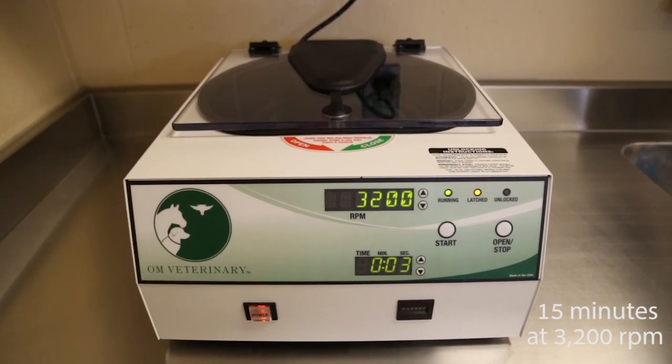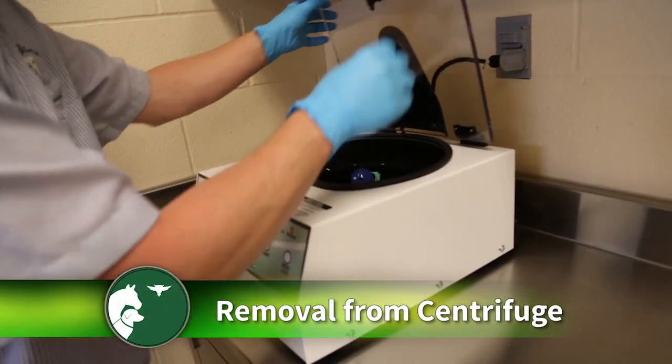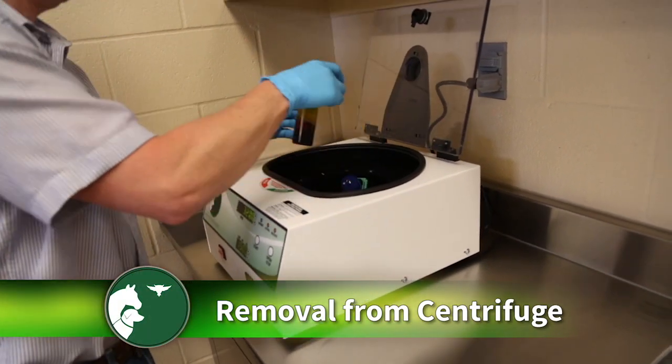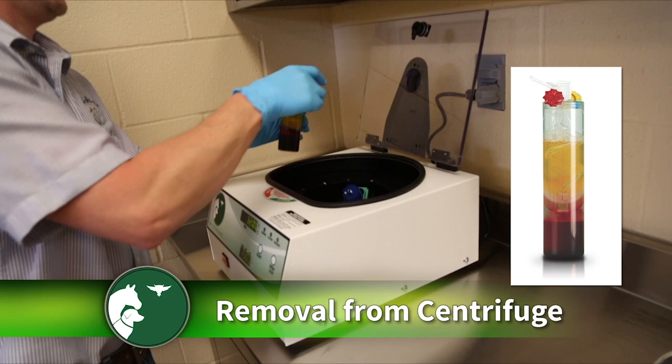At completion of the 15 minute spin, press the open button. Open the top latch and remove the device. You will notice the separation of the red blood cells at the bottom, the 6 ml of buffy coat platelet-rich cell suspension in the middle, and the yellowish platelet poor plasma on the top.